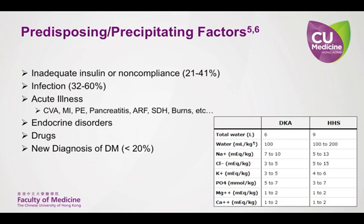Other acute illnesses and immunosuppressants can also induce HHS, as well as numerous drugs including beta blockers, calcium channel blockers, steroids, other immunosuppressive agents, phenytoin, thiazide diuretics, olanzapine, among others.